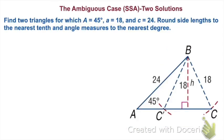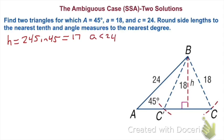Now we have the ambiguous case where we're going to get two solutions. We verify by checking height: H equals 24 times sine of 45, which gives approximately 17. Since A is less than C and A is greater than the height, we will indeed have two solutions. I'm going to work on one triangle at a time, starting with the larger triangle. I need to find angle C, side B, and angle B. The only thing I can solve for right now is angle C, since I have side A and angle A, and I know side C but not angle C.